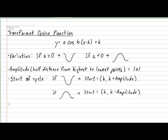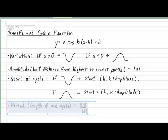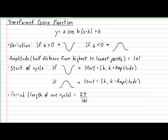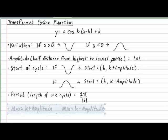The next element to consider is the period. The period represents the length of one cycle and can be calculated with the formula 2π divided by the absolute value of B. Finally, the last element to consider is the maximum and minimum values of the graph. The maximum can be calculated with the formula K plus the amplitude, and the minimum can be calculated with the formula K subtract the amplitude.